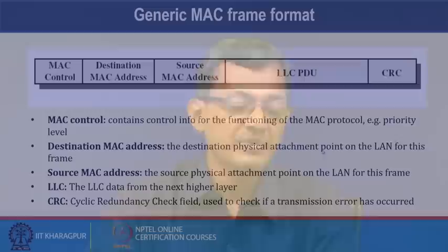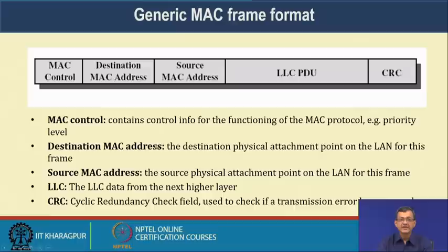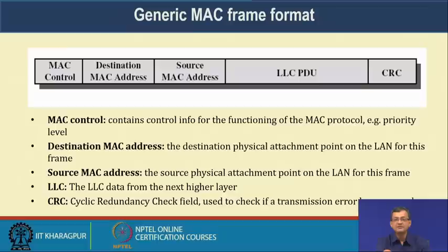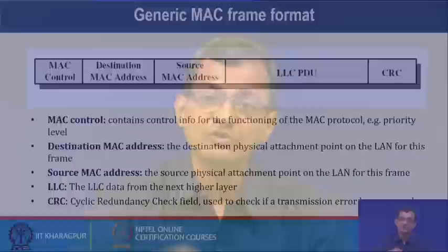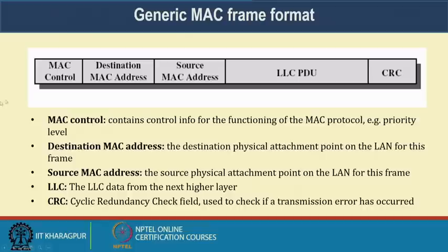The MAC control contains control information for the MAC protocol's function, such as priority level. The destination MAC address is the address of the physical attachment point on the LAN for this frame — for example, if your PC is connected via wired connection to a switch, the next hop destination is the switch. If it is wireless, the destination is the wireless access point, because of the hop-to-hop nature of transmission.